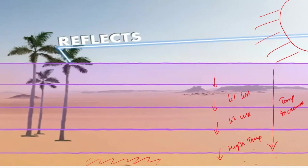When temperature increases, what happens to the density of the air? The air becomes more light — density decreases. And as density decreases, the refractive index also decreases. So each and every layer of air has a different refractive index because the temperature of each layer is also different. Because of the difference in temperature, there is a difference in optical densities, and because optical densities are different, refractive indexes are also different.